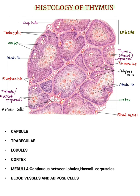Medulla. It is the inner light-staining zone of the thymus. It is continuous between the lobules — the medulla of one lobule is continuous with the medulla of the adjacent lobule. It consists of few lymphocytes but more epithelial reticular cells.